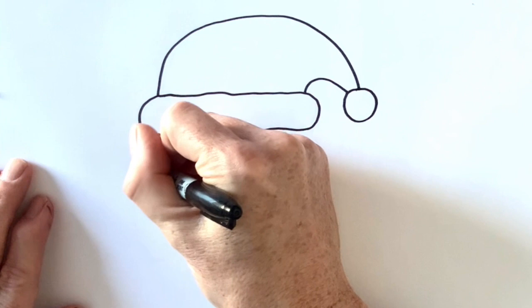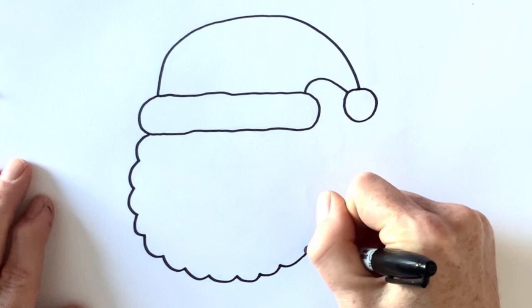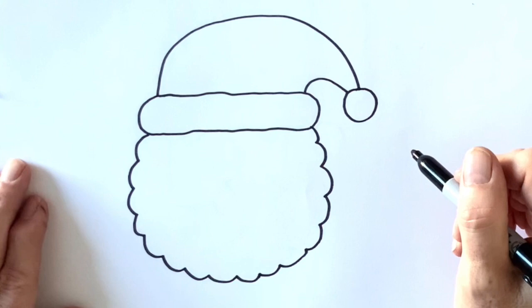Now I'm going to draw his beard and I'm going to draw a line made up of curved lines that goes all the way around from one side of his head to the other. That is the outline of his beard.